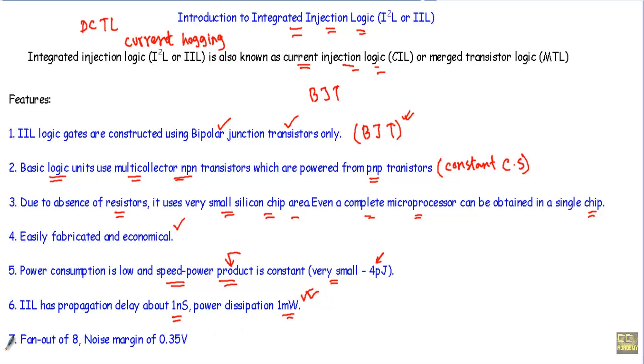After that, in number 7, you will see that the fan-out is 8. That means a single I2L logic gate can drive maximum 8 number of I2L logic gates. And you will see that the noise margin of this I2L will be 0.35 volts.